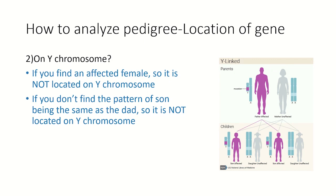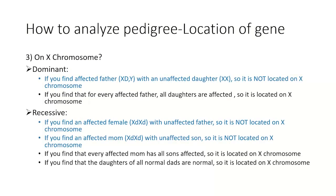Then I have to prove it is not on Y, and then prove it is not on X. To prove it's not on Y: if every affected son's father is not affected, then it's not on Y - because if the son is affected and the gene is on Y, the father should also be affected.